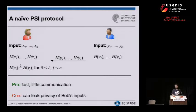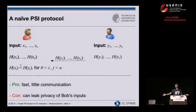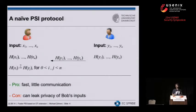On the downside, if you have only very small elements — say telephone numbers, names, or even email addresses — this can leak privacy about Bob's input. Alice can just go ahead and brute-force or compute the hashes for all possible elements and compare them, thereby obtaining Bob's inputs. So this protocol can only be used if the element space is sufficiently large, for example when comparing documents.